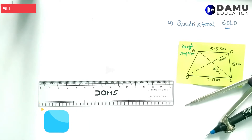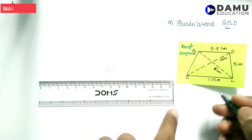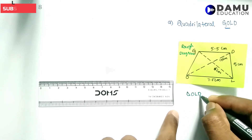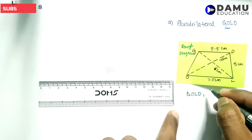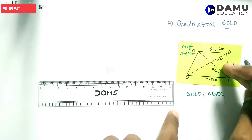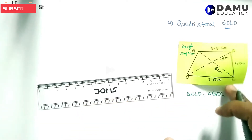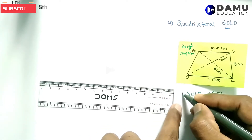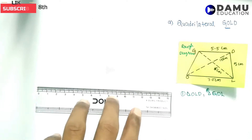First we need to construct the triangles. What we need to construct here is triangle OLD, then triangle GDL. We need to construct all these triangles, and after that we have to complete the quadrilateral. So first we construct the first triangle, then the second one, then join the diagonals.